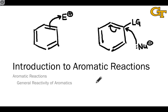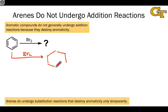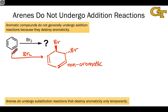Why don't arenes undergo addition reactions typical of alkenes? If Br2 added across the atoms of benzene, the resulting product would contain two new sp3 hybridized carbons — the carbons that develop new bonds to the bromine atoms. Although two carbon-carbon pi bonds would be left behind, this molecule is non-aromatic because it's no longer fully conjugated. That makes this overall reaction heavily disfavored — delta G for the reaction is much greater than zero. It's the destruction of aromaticity that explains why aromatics generally do not undergo addition reactions under normal conditions.